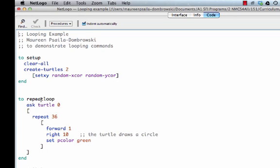In the repeat loop procedure, we ask Turtle 0, the first turtle created, to repeat 36 times moving forward 1 and turning right 10 degrees. As it does this, it also sets the patch color underneath itself to be green. Let's go take a look.